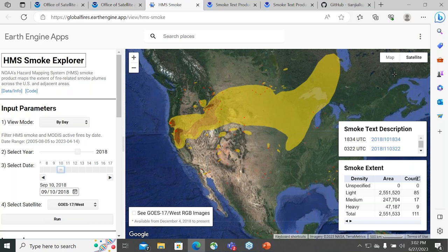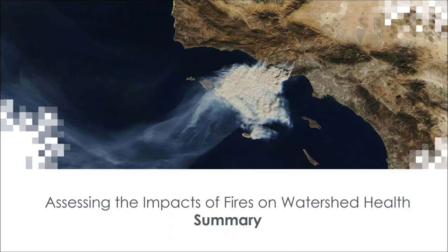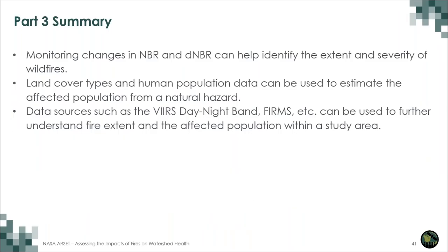That's a quick overview, and we're passing back to Brittany to close out our session. Thank you to everyone who attended this session and all the other sessions throughout this past week. To summarize this final session three: we learned about monitoring changes in NBR and dNBR and how they can help identify the extent and severity of wildfires. We learned about land cover types and human population data and how they can be used to estimate the affected population from a natural hazard.